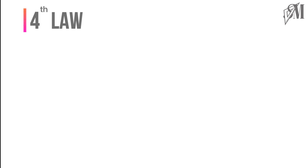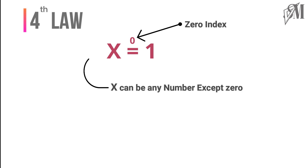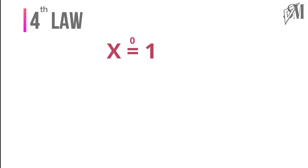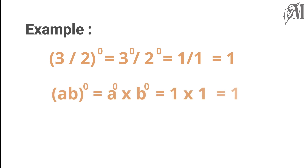The fourth law of indices is for a zero index: if any power has 0 as the index, its value becomes 1. Note that x can be any number except 0 — that is, 0 to the power 0 is meaningless. For example, (3/2)⁰ = 1, and (ab)⁰ = 1, even though a and b are unknown terms.